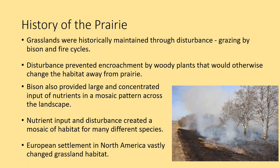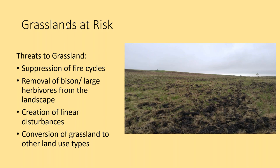With European settlement in North America, the landscape vastly changed — larger cities and towns, lots of land use changes. Grasslands are now at risk. Threats include the suppression of fire cycles. As people built infrastructure, homes, and businesses, grass fires were suppressed, which makes sense but doesn't allow the prairie landscape to renew itself or get rid of thatch buildup.